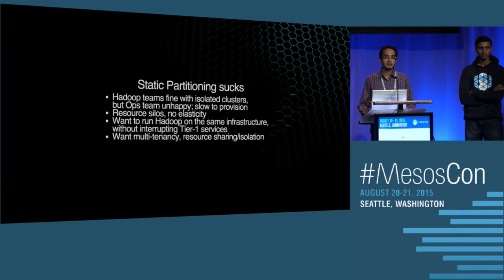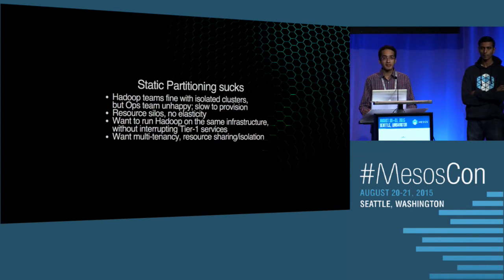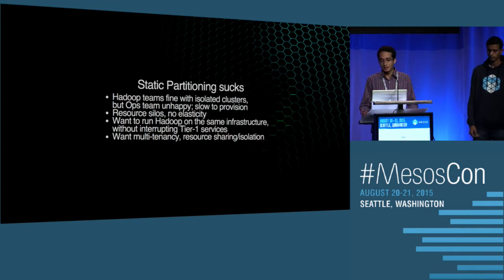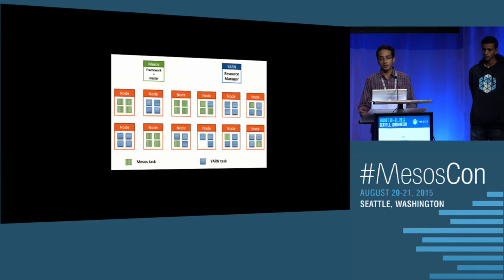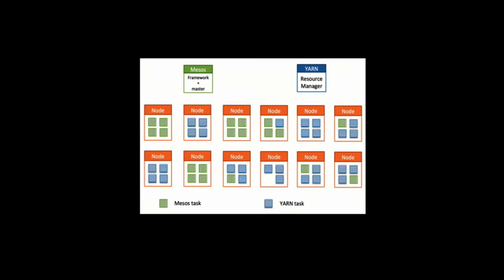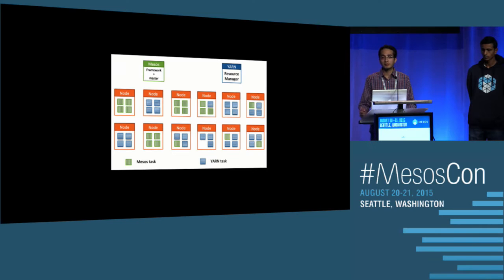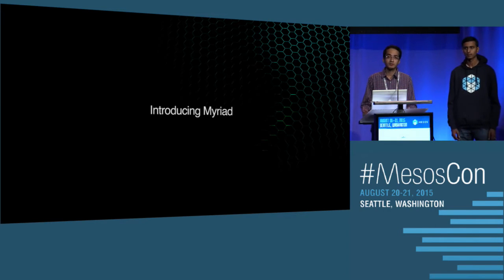Static partitioning is a problem because if a node goes down in your Hadoop cluster, it's a slow process to provision a new one and add it back. It also creates resource silos reducing elasticity — for instance, during a traffic spike you can't offload work onto the Hadoop cluster, and at night when traffic is low you can't borrow resources from the Mesos cluster. Ideally we want a model where both Mesos and Yarn coexist — certain nodes running both a Mesos task and a Yarn task together — giving you elasticity and flexibility to schedule any type of workload.